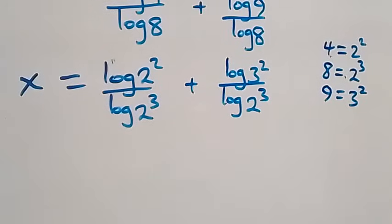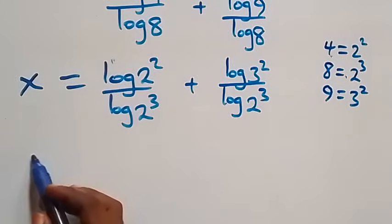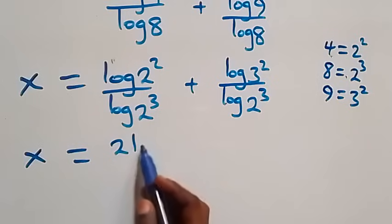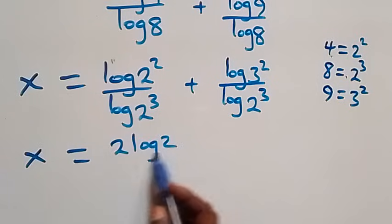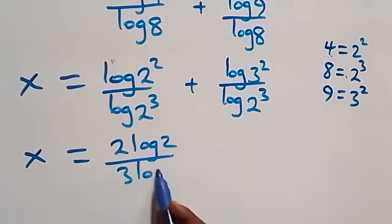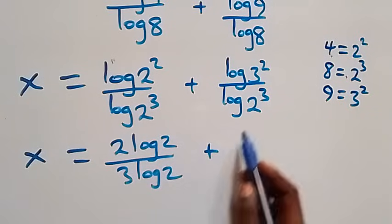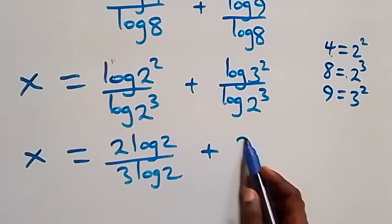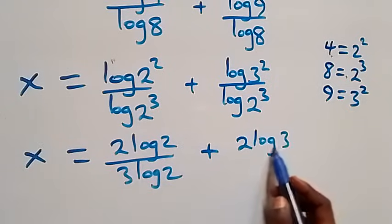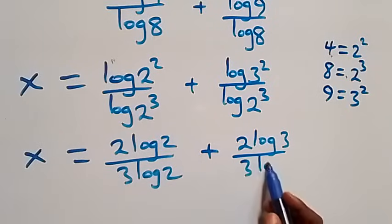Applying the power law of logarithm again, this becomes x equals 2 log 2 over 3 log 2, plus 2 log 3 over 3 log 2.